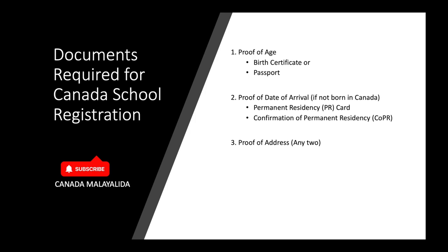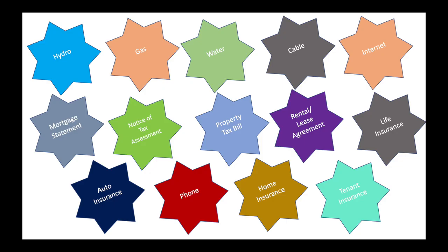You will need to provide supporting documents. For proof of age, you can use a birth certificate, passport, COPR, or PR card — the COPR is a very important document in Canada. For proof of address, acceptable documents include hydro bill, water utility, cable TV, internet bill, phone bill, home insurance, tenant insurance, or automobile insurance.